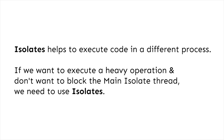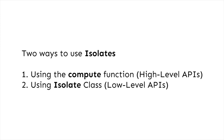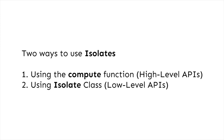Isolates help to execute code in a different process. So if you want to execute a heavy operation and you don't want to block the main isolate thread, then we need to use isolates. There are two ways to use isolates: one is using the compute function at a high level, and the second method is directly using the isolate class with SendPort and ReceivePort for exchanging messages between isolates.